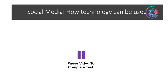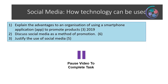Next we're going to look at social media and how technology can be used. Some of the questions that may come up — one from 2019 asked you to explain the advantages of an organisation using a smartphone application to promote products. If we change that to social media, which is coming up, you might be asked to discuss social media as a method of promotion, or justify its use. You can pause the video at this stage to try and answer some of these questions.